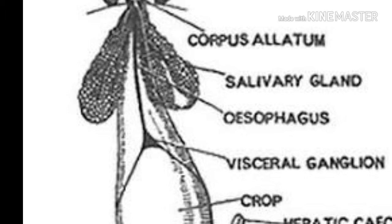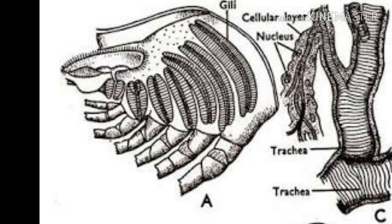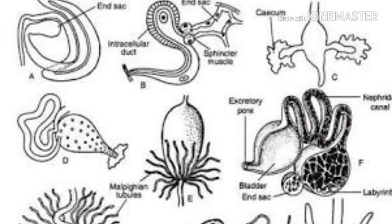Respiration is by gills in prawns, book gills in crabs and king crabs, tracheal system in insects, and book lungs in scorpions. The trachea carries oxygen directly to the body tissues. The circulatory system is open type, with blood flowing in open tissue spaces.